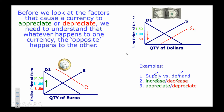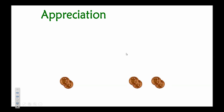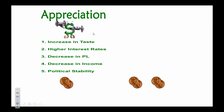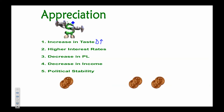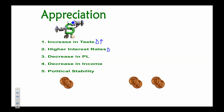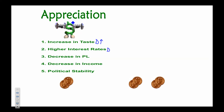Here are the rules for what causes a currency to appreciate. First, an increase in taste for a nation's goods — if people want American products, they must demand more US dollars. Second, higher interest rates: if US interest rates are higher than in other countries, foreigners want to put their financial capital in the US to earn higher returns, increasing demand for the dollar.